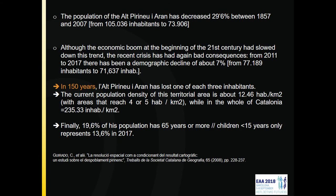The population of Alt Pirineu i Aran has decreased about 30% between the 19th century and today. Although the economic boom of the 21st century with the crisis again, this population did provoke a demographic decline of about 70%. In 150 years, Alt Pirineu i Aran has lost one in three inhabitants. The current population density of this territory is about 12 inhabitants per square kilometer, with some zones having only four or five inhabitants — like the Sahara, for comparison.